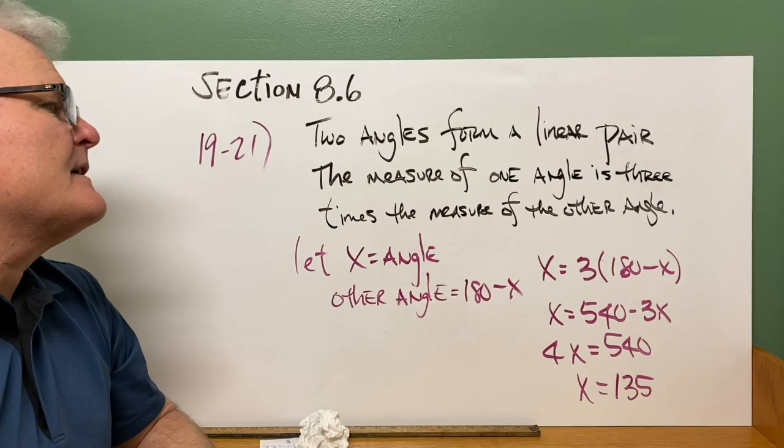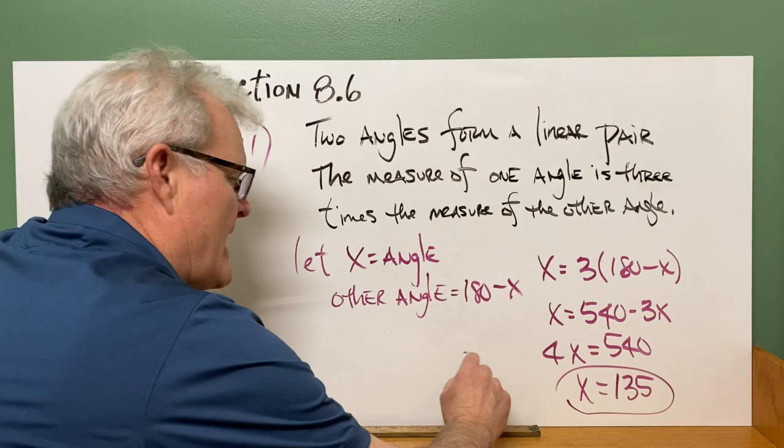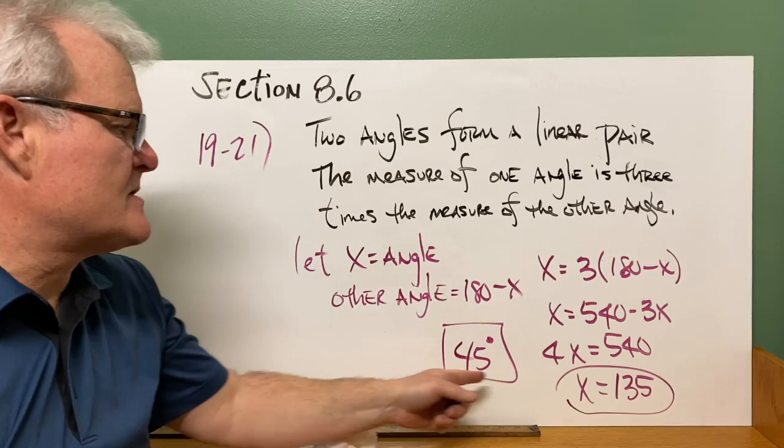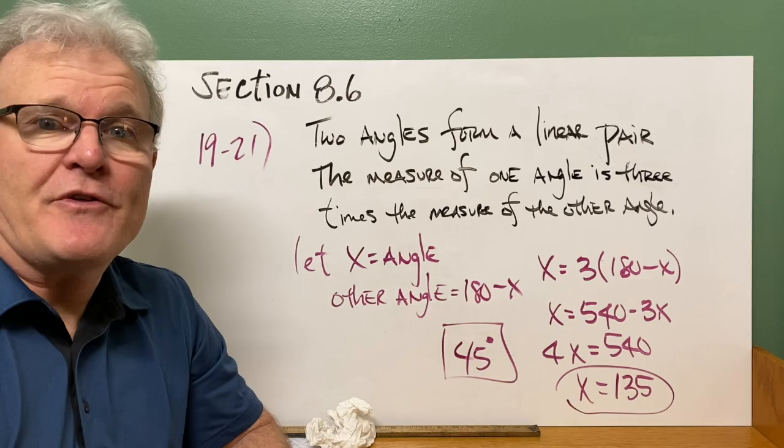So that means your one angle is 135. That means your other angle would have to be, so if x is 135, the measure of the other angle, well, if they are a linear pair, it's going to have to be 45 degrees. And now these two angles, they satisfy the two conditions. They're a linear pair because they add up to 180. And one of the angles is three times the measure of the other. Three times 45 gives you 135.